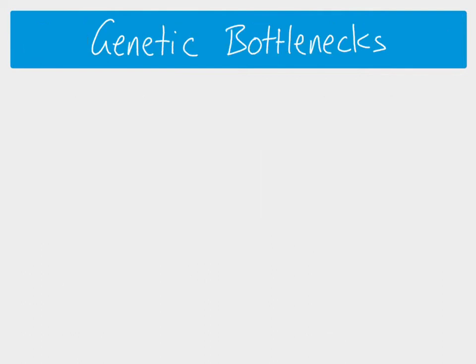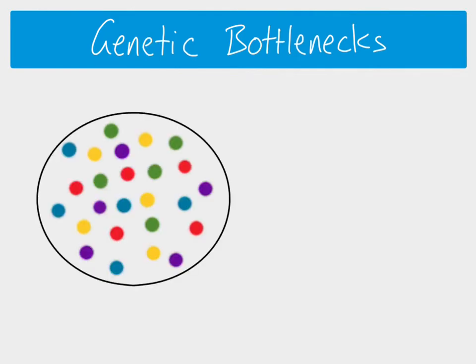Genetic bottlenecks are one example of when genetic drift can occur. Here is our gene pool, and I'm using different colors to represent different alleles in the population. We're not interested in whether alleles are dominant or recessive — it's just about the diversity in the gene pool. The allele frequencies are kept equal in this example, with a frequency of 0.2 for each of the different alleles represented by the different colors.